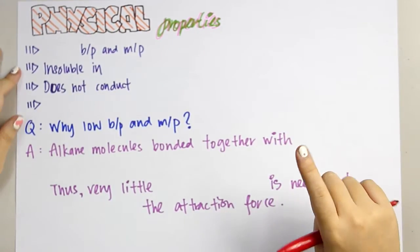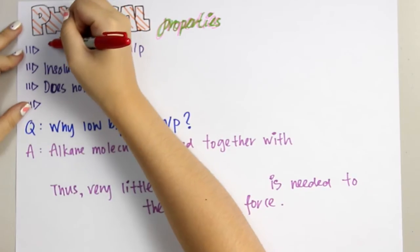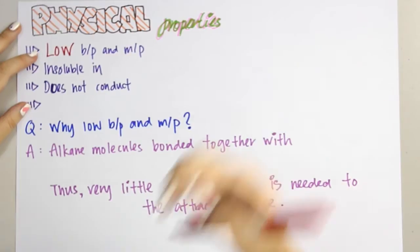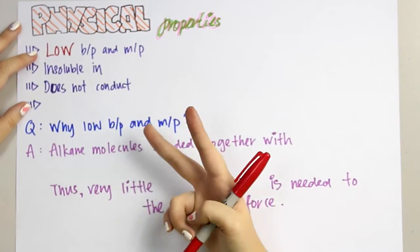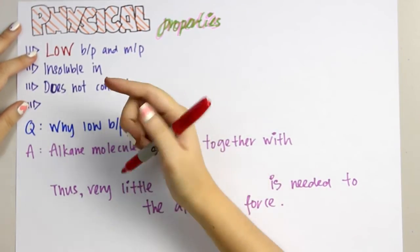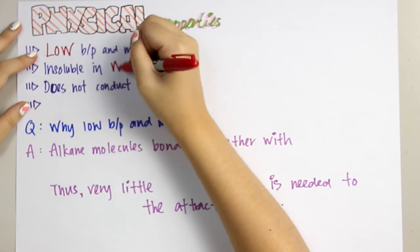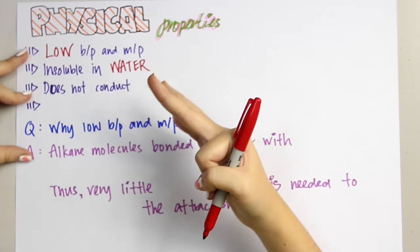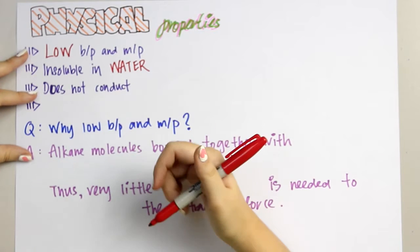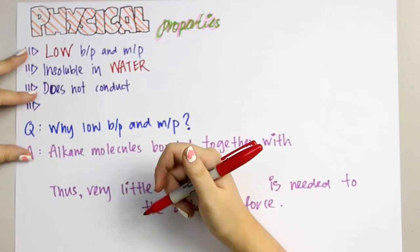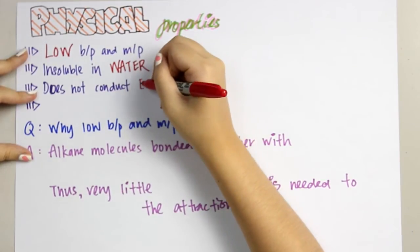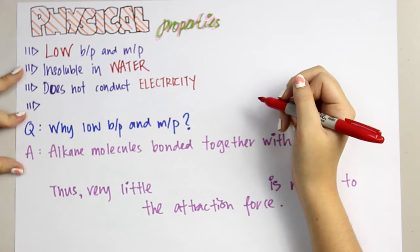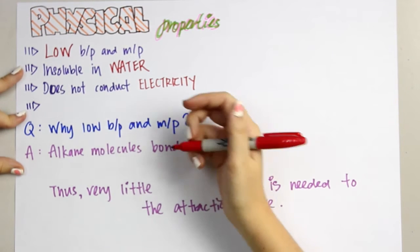The first one: they have low boiling and melting points. Second, they are insoluble in water. Third, all alkane compounds do not conduct electricity. And the fourth one: they are neutral.